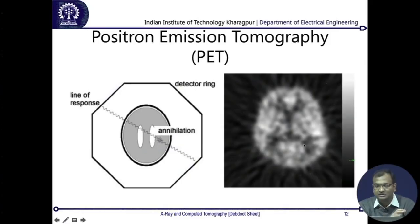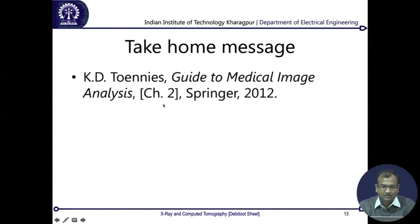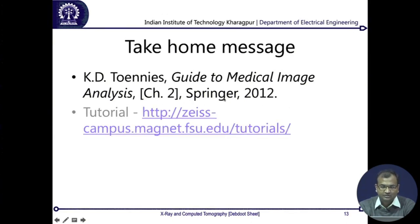For further reading on microscopy and molecular imaging, refer to Tony's Guide to Medical Imaging, Chapter 2, Digital Imaging Techniques. For microscopy specifically, the Zeiss Campers Magnets at FSU tutorial provides very interactive flash-based exercises where you can change different configurations of a microscope and observe what happens to the light beam and image formation. With that, we conclude the first week of lectures. In the second week, we will begin with basic analytical tools useful for medical image analysis.